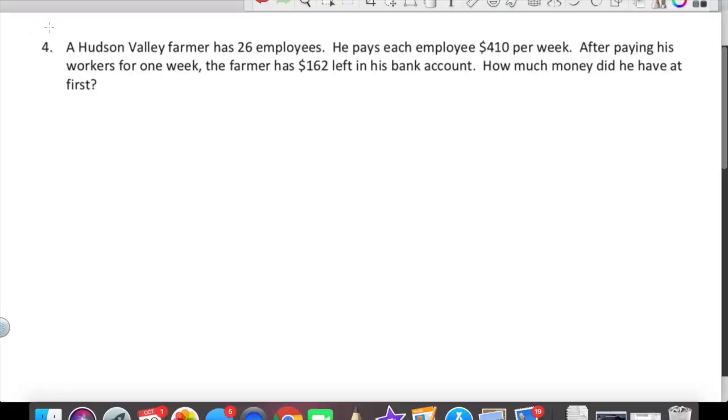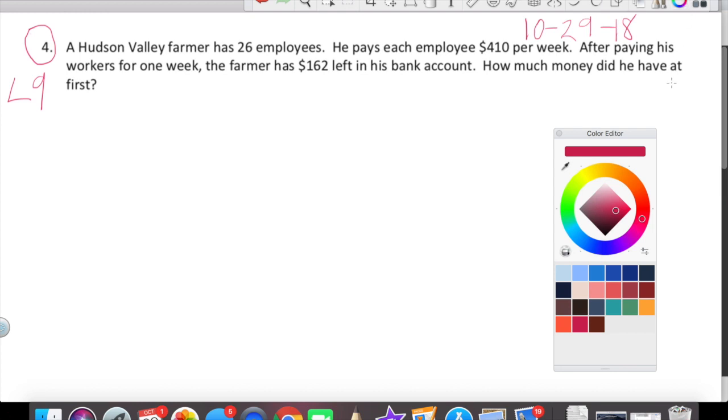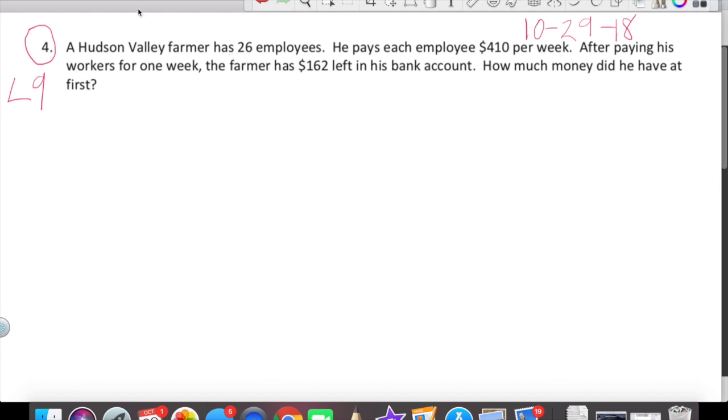Here is that one fabulous problem I promised you. We are in L9, lesson 9 on 10, 29, 18. I guess we should do orange since we're just so close to Halloween. We are going to read this problem. We are going to use our strategies for word problems. RDW. Read the problem first. A Hudson Valley farmer has 26 employees. He pays each employee $410 per week. After paying his workers for one week, the farmer has $162 left in his bank account. How much money did he have at first?